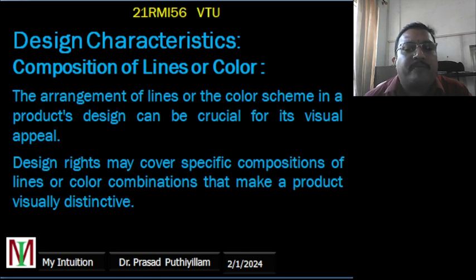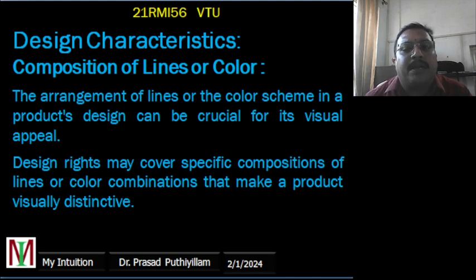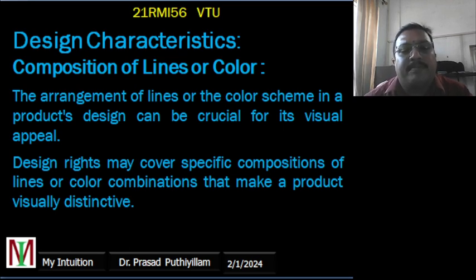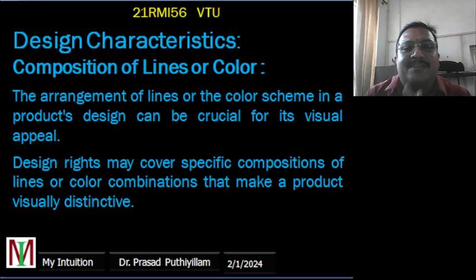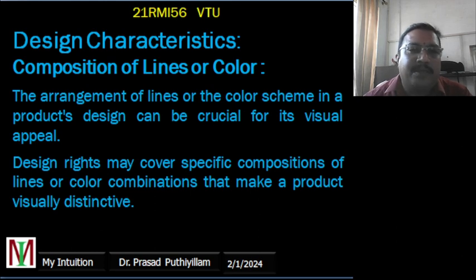The second characteristic is the composition of lines or color — the way lines are arranged or colors are used in a product's design is very important for its aesthetic and visual appeal. Design rights can protect a specific combination of lines or colors that gives a product a unique look. When a creative person arranges lines, the result can be something remarkable — such creative works need to be protected.